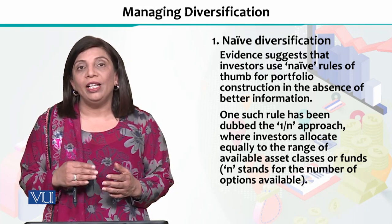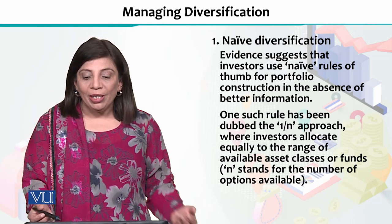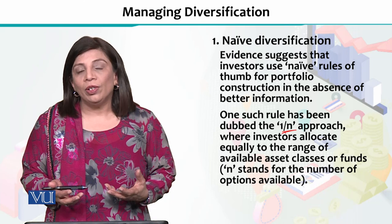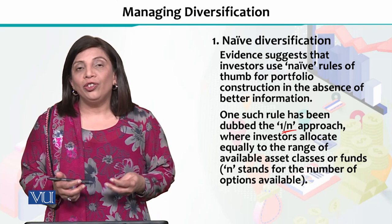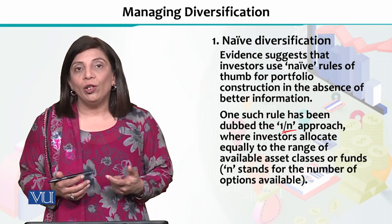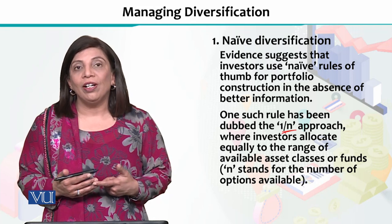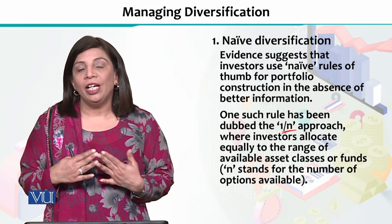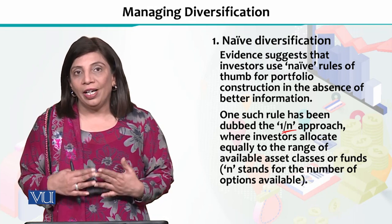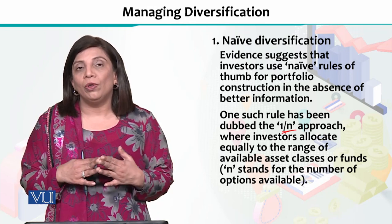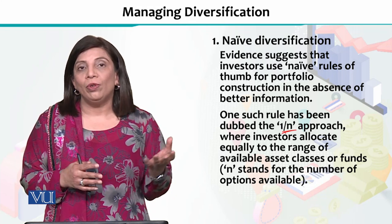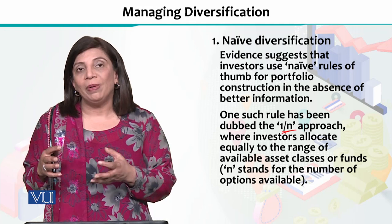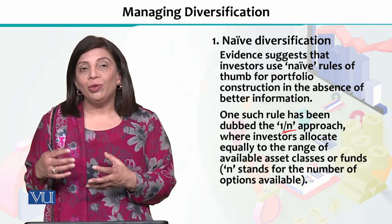The first type of diversification is called naive diversification. This means that if you have two types of financial instruments to invest in, a naive diversification approach means you invest in one type of instrument and the rest of your money goes into another type of investment instrument.